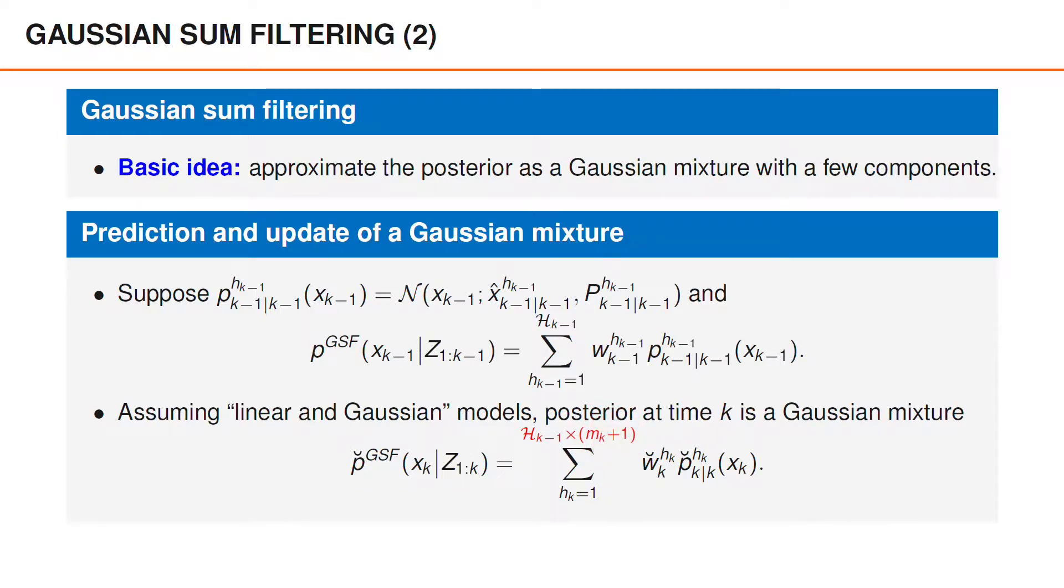As before, we use this symbol breve to denote the posterior at time k before we introduce the new approximations. If both g_k and pi_k are linear in Gaussian, and we have a constant probability of detection, p breve is a Gaussian mixture. To obtain a tractable algorithm, we need to limit the number of components in the posterior to a reasonable level. The main question that we are facing is, therefore, how we can approximate this Gaussian mixture as a Gaussian mixture with fewer components. We will describe three simple techniques to reduce the number of hypotheses.